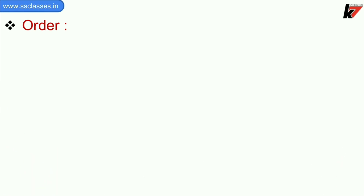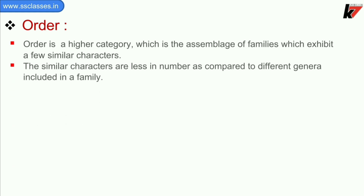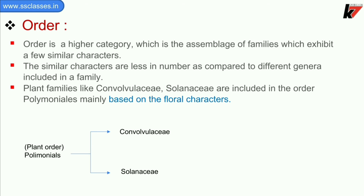Now we will see order. Order is a higher category which is the assemblage of families that exhibit a few similar characters. The similar characters are less in number as compared to different genera included in a family. Plant families like Convolvulaceae and Solanaceae are included in the order Polymoniales, mainly based on floral characters. For animals, order Carnivora includes families Felidae and Canidae.